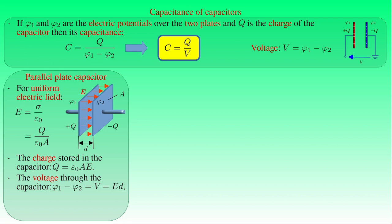Substituting these two equations into the general expression for capacitance, we can write the capacitance C of a parallel plate capacitor as ε₀ times the ratio of the area A of the plates to the distance D between them. In other words, its capacitance is directly proportional to the area of the plates and inversely proportional to the distance between them. The formula obtained for the capacitance can also be verified by experiments measuring the charge Q and the voltage V of the capacitor. If the capacitance C of a parallel plate capacitor is already known with high accuracy, we can determine the dielectric constant of vacuum from the geometry of the capacitor.